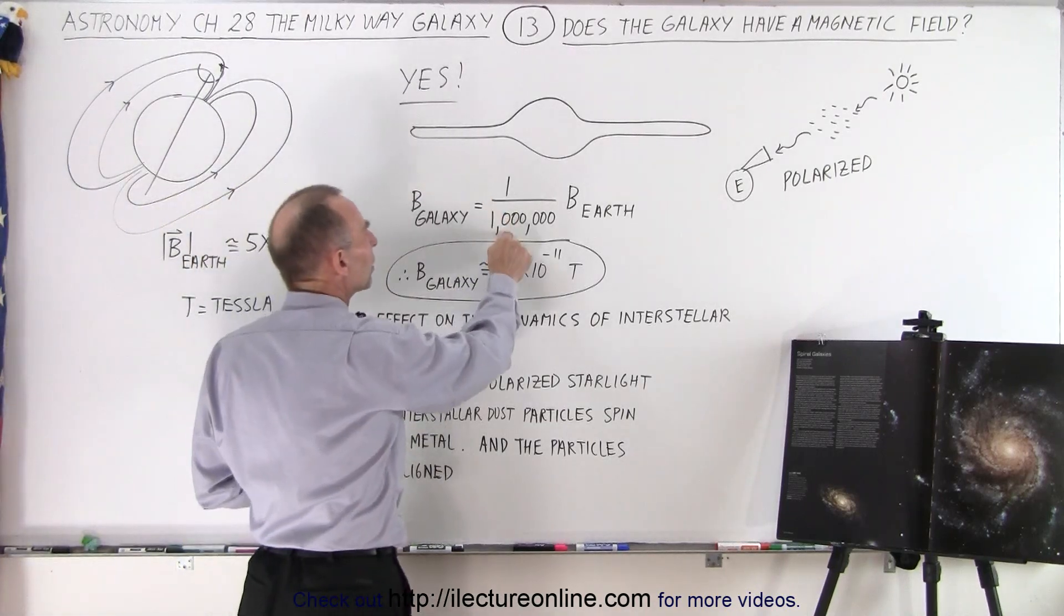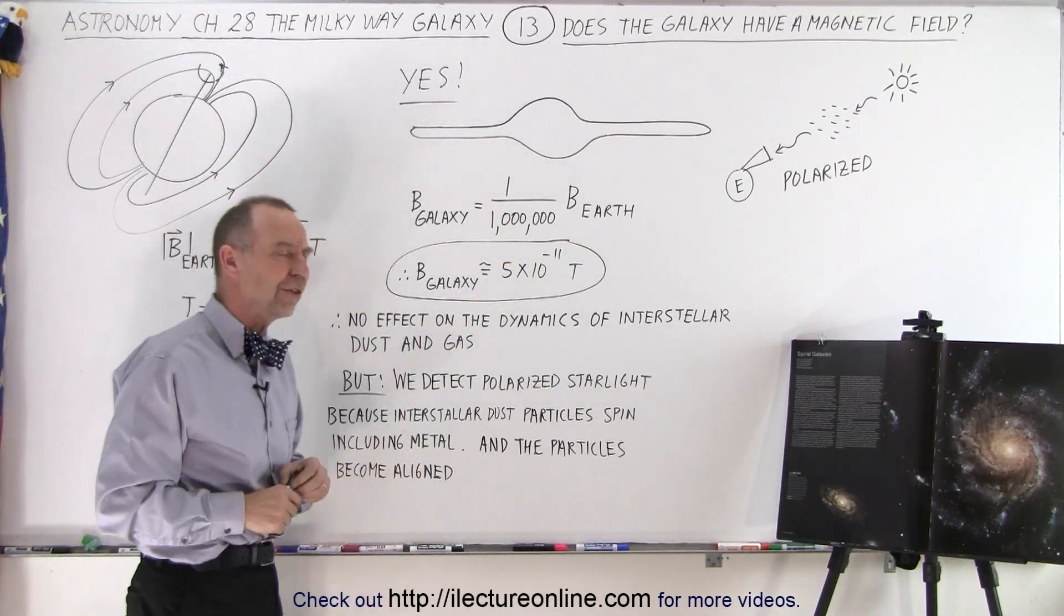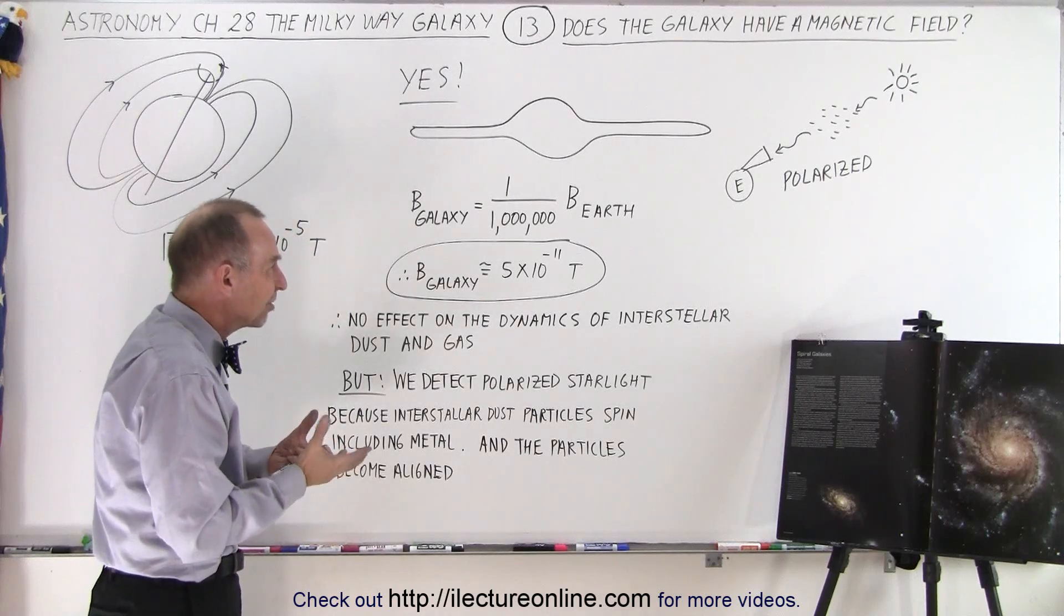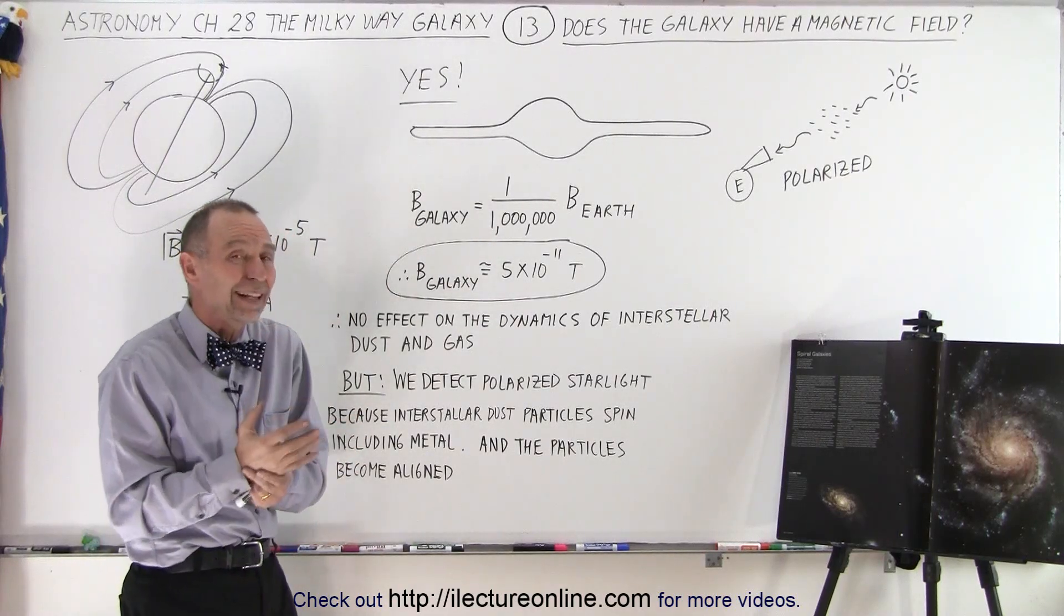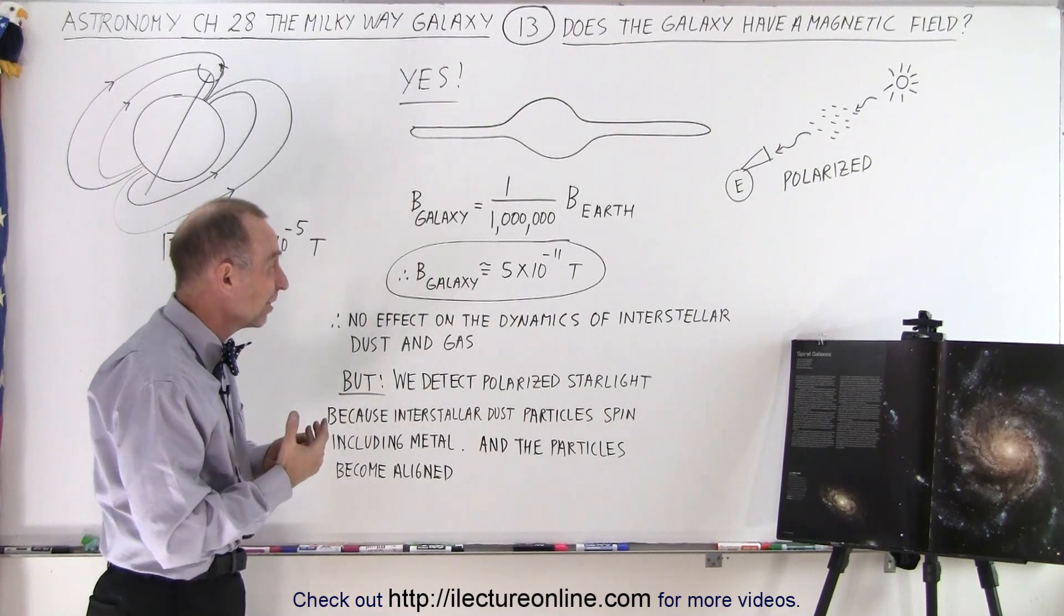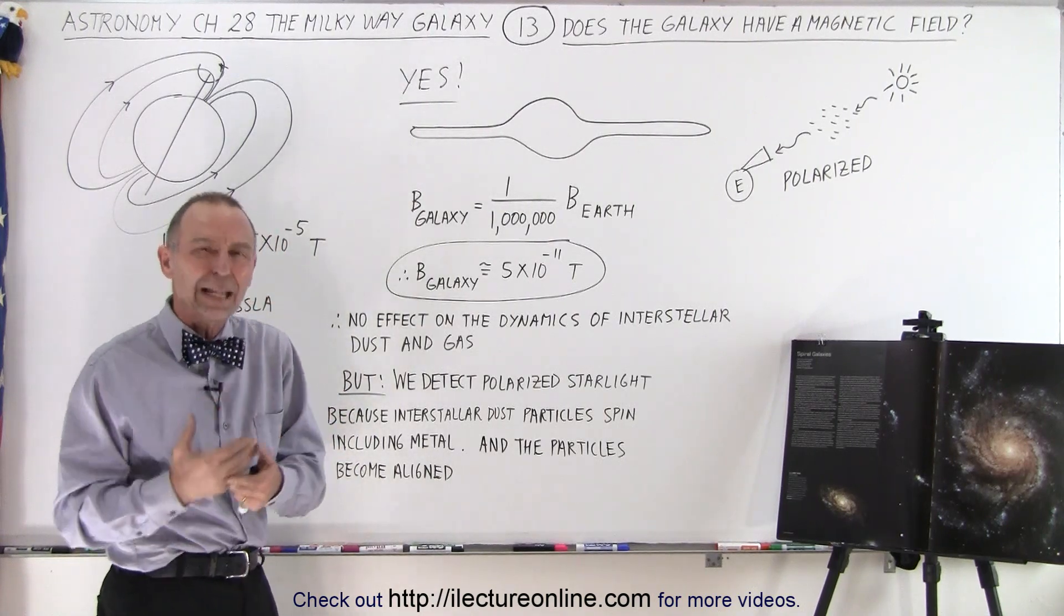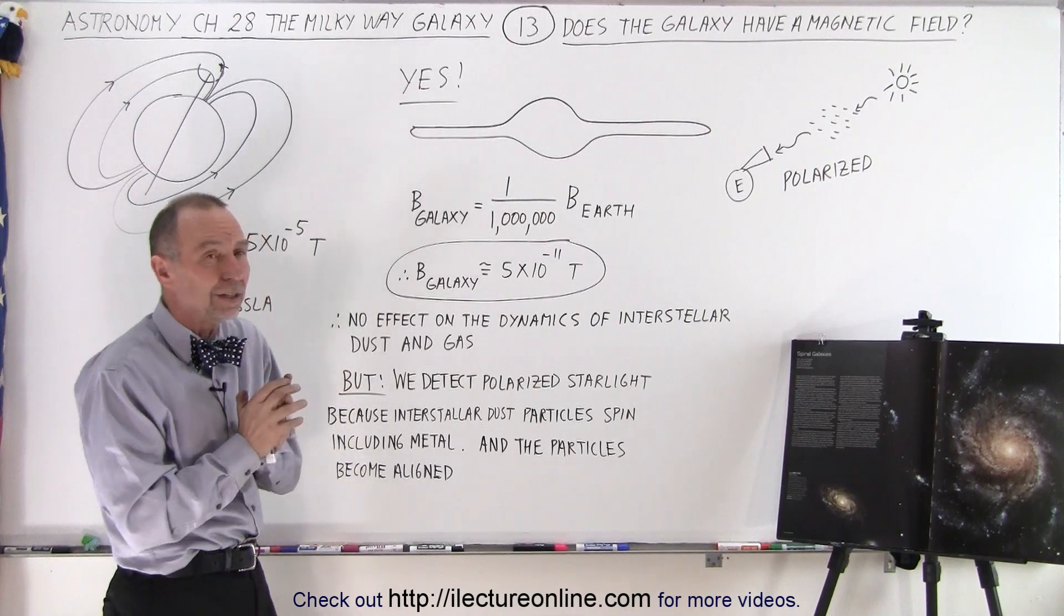It's only about one millionth the strength of the Earth's magnetic field. And so therefore, the magnetic field of the galaxy is around 5 times 10 to the minus 11 teslas. Minus 11, that's like 50 nanoteslas. So it's a very weak magnetic field.